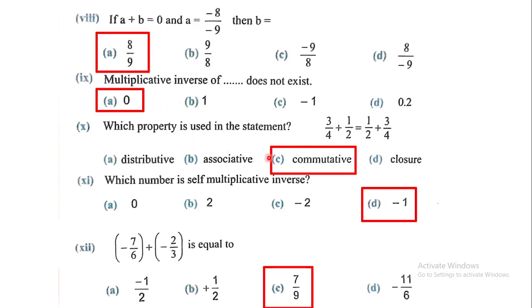Which property is used in the statement? Commutative property. Which number is self-multiplicative inverse? Minus 1. Minus 7 by 6 plus minus 2 by 3 equals 7 by 9.